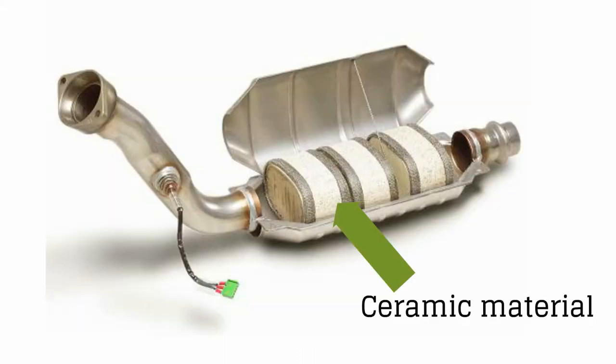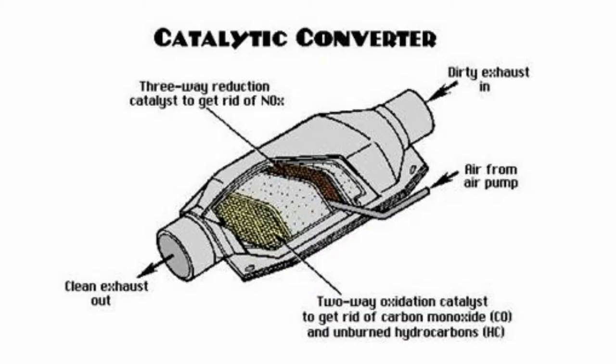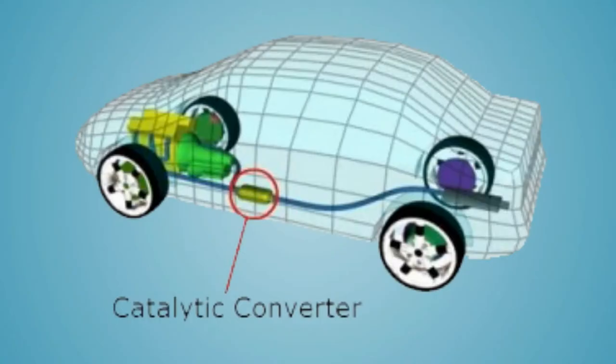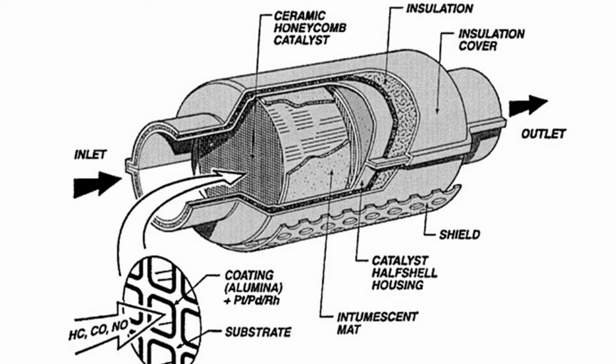Both contain ceramic structures that provide maximum surface area for the catalyst to interact with exhaust gases. The chemical reactions inside can reduce pollution up to 40%. One end of the catalytic converter connects to the engine and the other to the exhaust. It receives toxic gas from the engine, converts it to less toxic substances, and emits them to the environment.